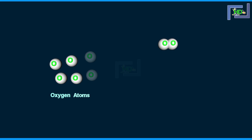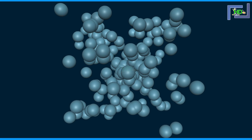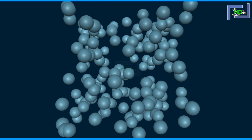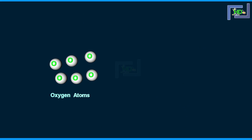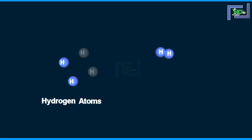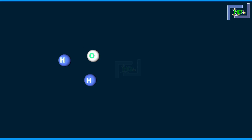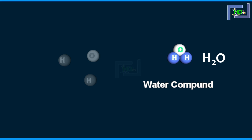Matter consists of small particles which are called atoms. Atoms are combined to form molecules. Molecules are combined to form compounds. That means all the elements are made up of small particles called atoms. Suppose we consider oxygen atoms — they combine to form oxygen molecules. Hydrogen atoms combine to form hydrogen molecules. When hydrogen atoms and oxygen atoms combine, a water compound, that is H2O, will be formed.